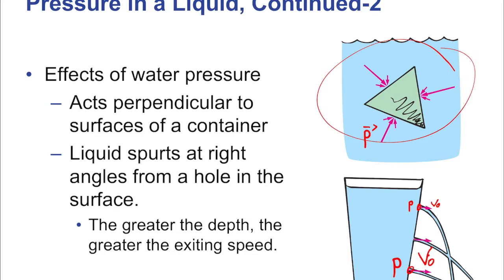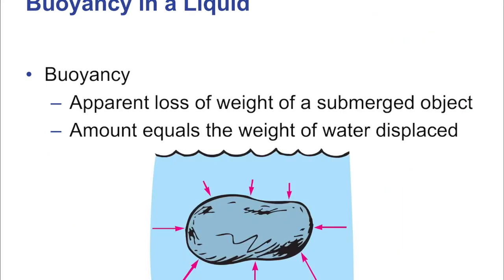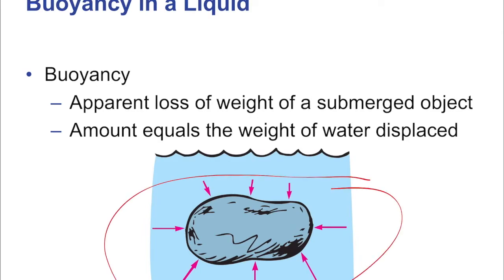Pressure is related to everything else because physics is all about building ideas on top of other ideas. The beach ball shoots up out of the water because the pressure at the bottom of the ball is greater than the pressure on the sides and especially on the top — that's buoyancy. Buoyancy is the apparent loss of weight of a submerged object, and it is equal to the weight of the water displaced.